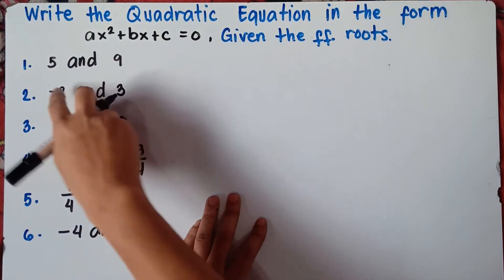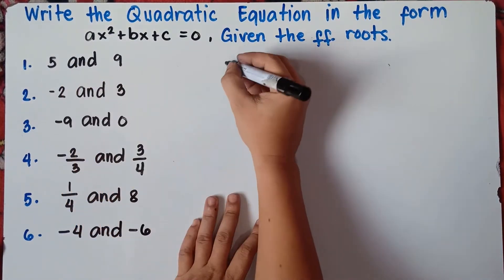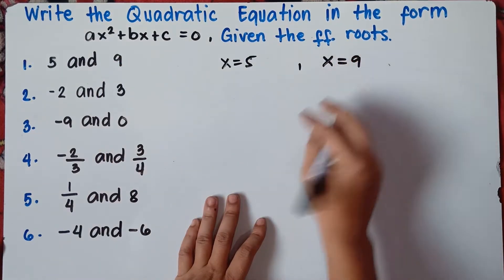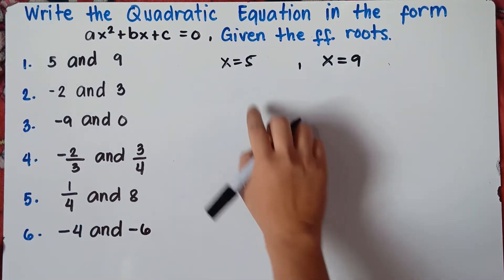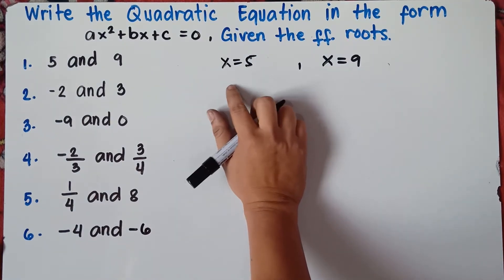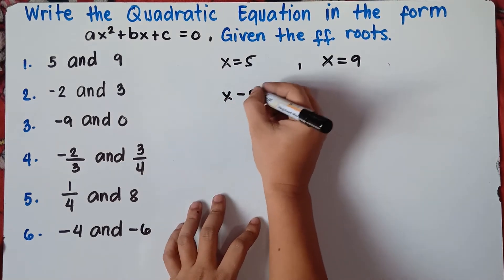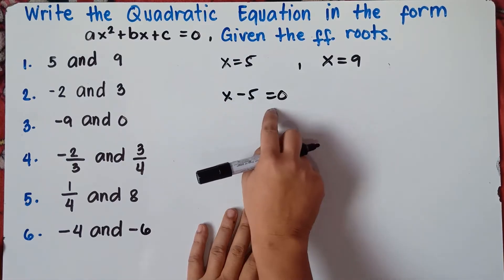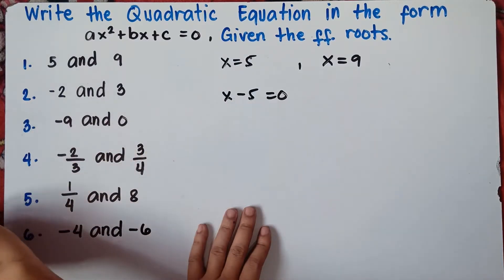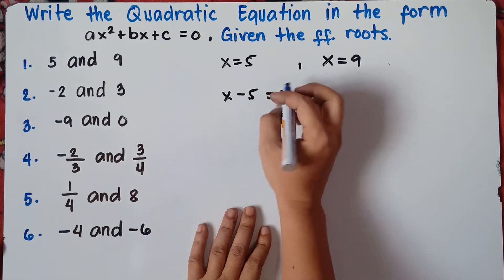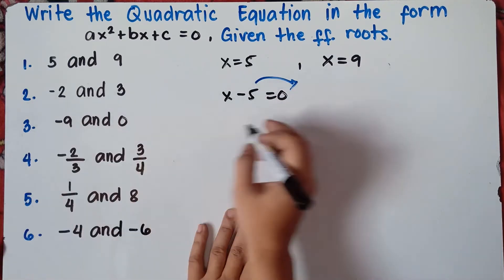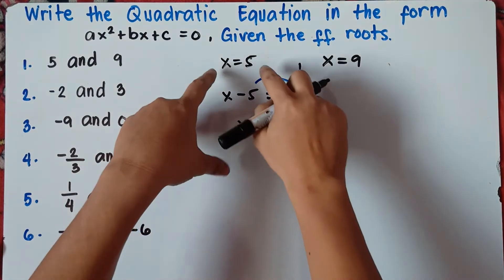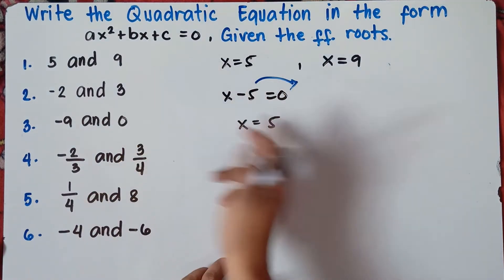So for number one, we have x equals 5 and x equals 9. These are the roots. Do you still remember, in getting the value of x, x equals 5 can also be written as x minus 5 equals 0. When we equate this into 0, to get the roots, we transpose negative 5 from left to right — it will change sign and become positive 5. So to get the quadratic equation, we do it in reverse.